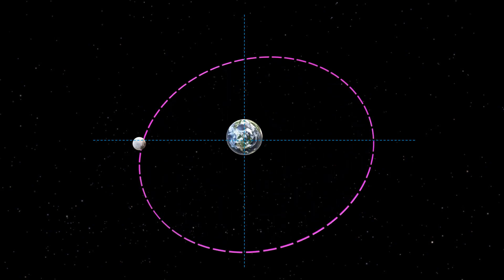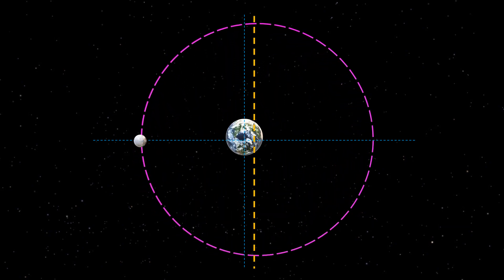Also, the moon's orbit around the Earth is not circular. It has an eccentricity of 0.0549, which gives us two points: perigee and apogee.